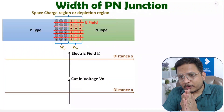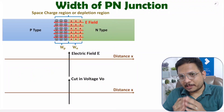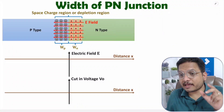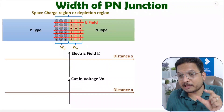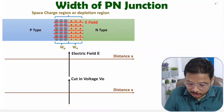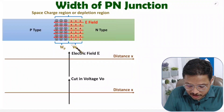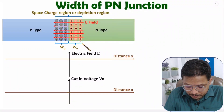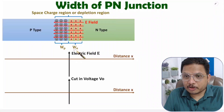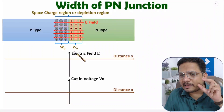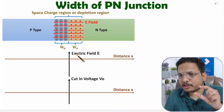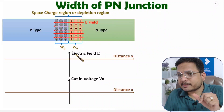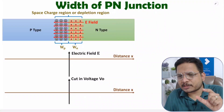Hello friends, welcome to Engineering Funder Family. In this video I am going to derive the width of the pn junction depletion region. The depletion region has a width of Wp plus Wn, and I will be deriving the equation for this width, which is very essential in solving problems based on the pn junction.